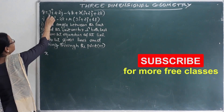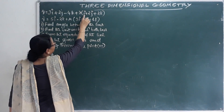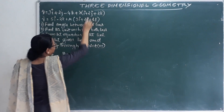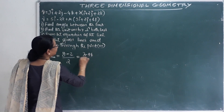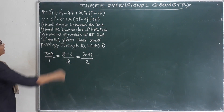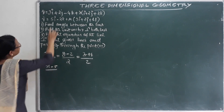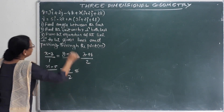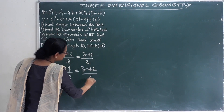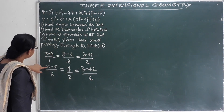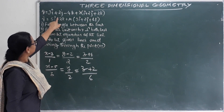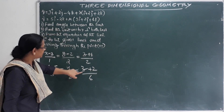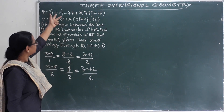Converting to Cartesian equation: the x-component corresponds to x minus 5 over 3, the y-component corresponds to y over 2 (noting the sign changes), and the z-component corresponds to z plus 2 over 6. So the Cartesian equation is (x − 5)/3 = y/2 = (z + 2)/6.